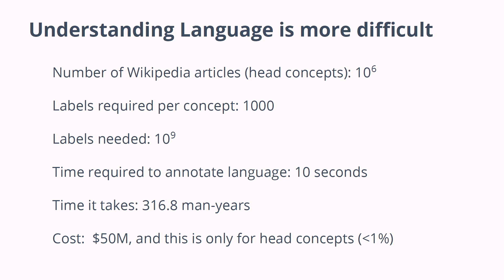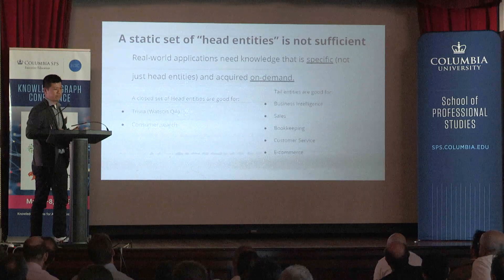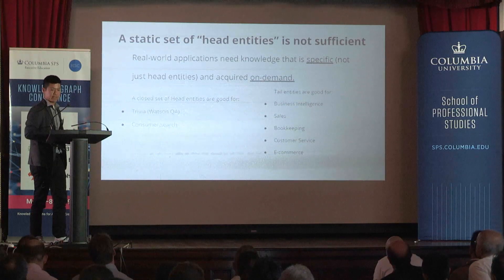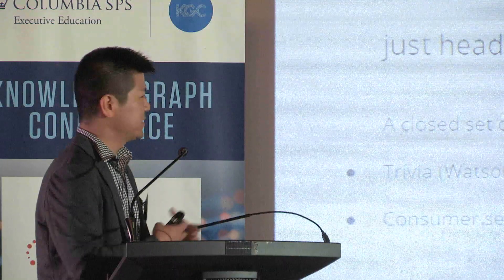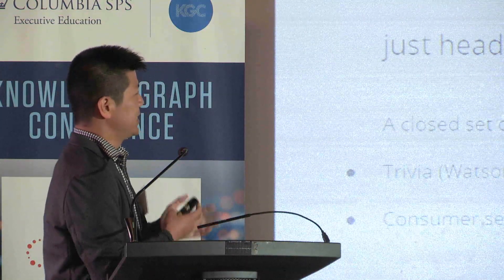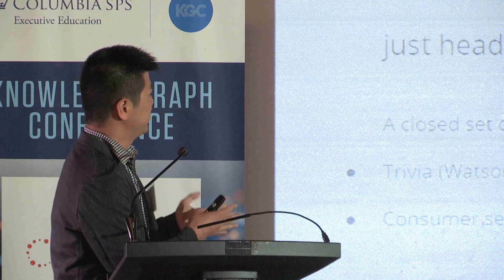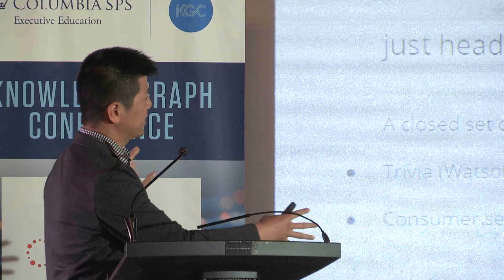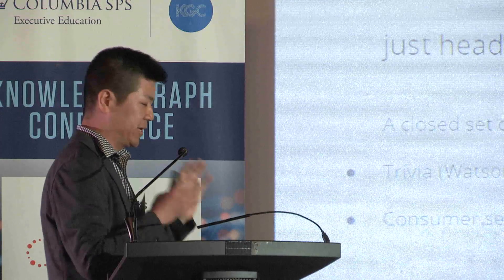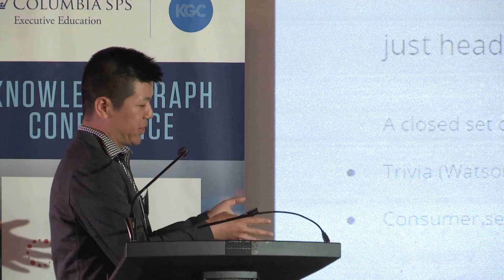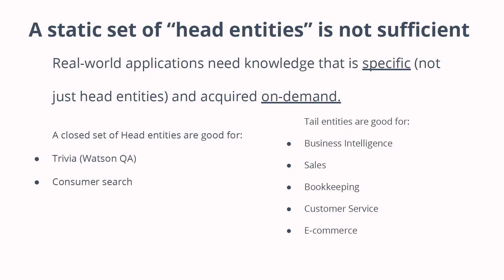I want to make the point that having a static set of head entities isn't really sufficient to understanding language. Real-world business applications need knowledge that's specific — not just these head entities. They need a long tail, and they need the ability to acquire knowledge on demand. You can't just hard-code a knowledge base into a robot or any intelligent system and have it go off into the world with a pre-canned set of knowledge.